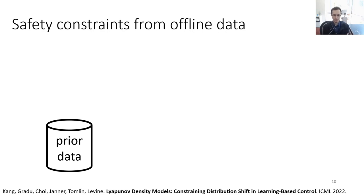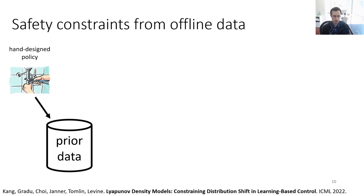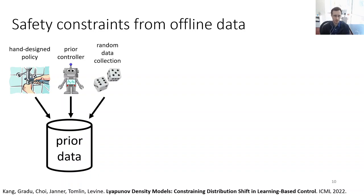Let's make the notion of a safety constraint from offline data more precise. We assume we're given some prior data, which could come from a variety of sources: hand-designed policies, previous controllers, humans controlling the robot — very practical in autonomous driving — or even random data collection. There's no assumption that the prior data only shows safe behaviors, although typically it would, because it's very hard to collect lots of data on car crashes. We don't need the prior data to show catastrophic failures, but we don't assume it does not contain them either.